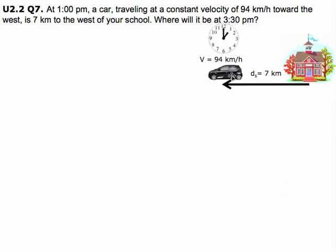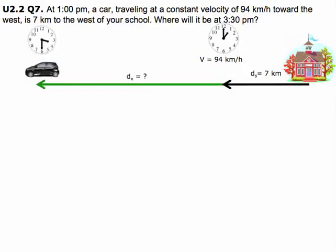So here we have a diagram where at 1 o'clock the car is going 94 km an hour. The car is a distance of 7 km from the school, so the ds is the distance from the school from when it starts. And at 3:30 it's gone a distance which we need to calculate, which is dx. So how far has the car gone from 1 o'clock to 3:30?